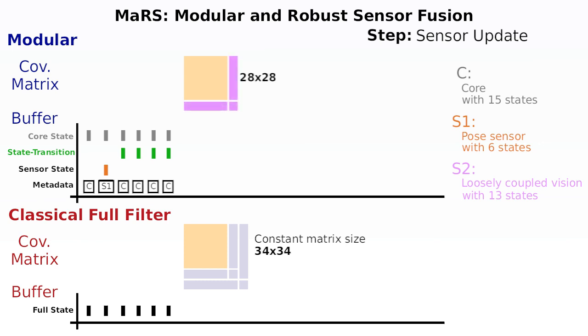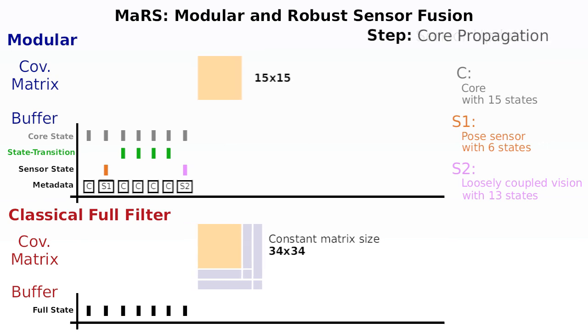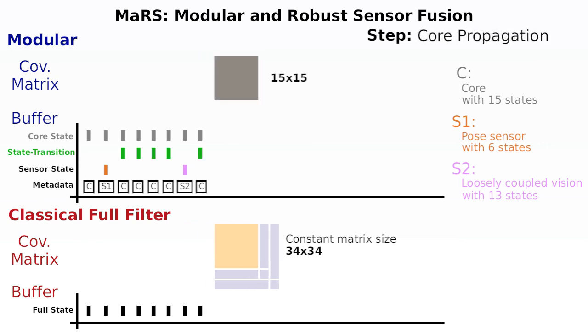The next step introduces a measurement of Sensor 2, which is performed the same way as it was done for Sensor 1. The introduction of a measurement for Sensor 2 performs a full state and covariance update for the classical approach.